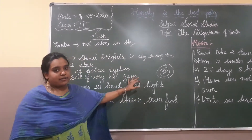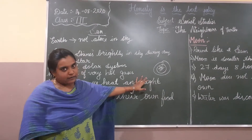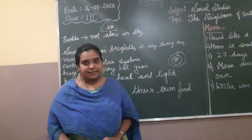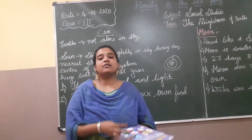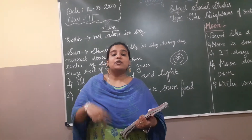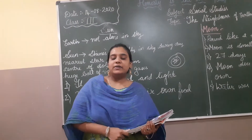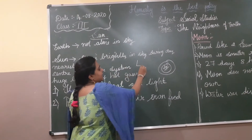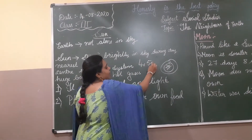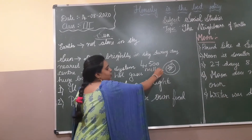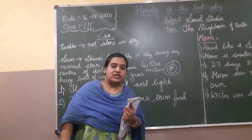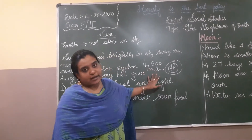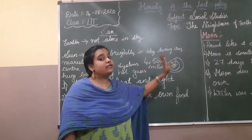Sun is the center of the solar system. We have to learn that sun is also a big star — it produces its own heat and light. Sun was formed nearly 4,500 million years ago. Then the sun and its family came into existence.